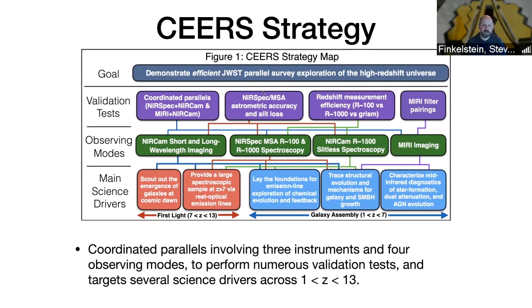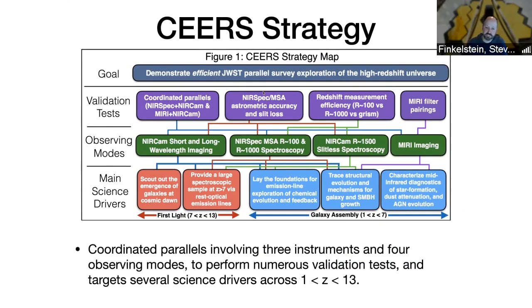What are our main science drivers? The program was built around trying to explore the Redshift 10 universe. We want to get a very good idea of what's happening at Redshift 10, where we've just really hit the tip of the iceberg with Hubble — one, maybe two galaxies out at that epoch — and scout out the emergence of galaxies at even higher redshifts. On the NIRSpec side at high redshift, we want to provide a large spectroscopic sample of Redshift 7 through rest-frame optical emission lines, moving beyond Lyman alpha and carbon-3. With our NIRCAM imaging, we want to trace structural evolution and mechanisms for galaxy and supermassive black hole growth. And with MIRI imaging, we want to characterize mid-infrared diagnostics of star formation, dust attenuation, and AGN evolution — all using two instruments at once.